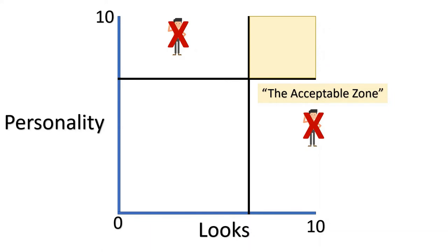Anyways, within the acceptable zone, we have another subset called the ideal zone represented in blue. These are the men she'll consider seriously dating or marrying.